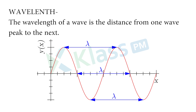What is wavelength? The wavelength of a wave is the distance from one wave peak to the next. If you draw a diagram of a wave, there are two peaks, and the distance between those two peaks is nothing but the wavelength.